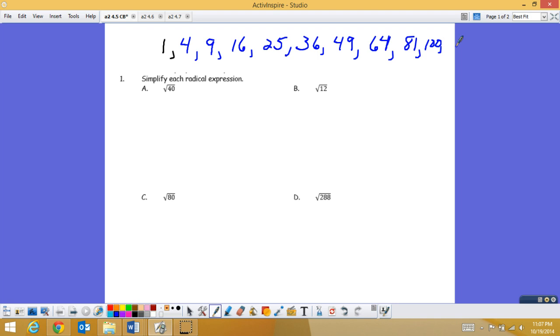So to simplify these, what we're basically looking for are these values that go evenly into a number. And we're going to use the property that says, if the square root of a times b exists, then the square root of that product is the same as the square root of a times the square root of b. So the square root of a product is the same as the product of the individual square roots.